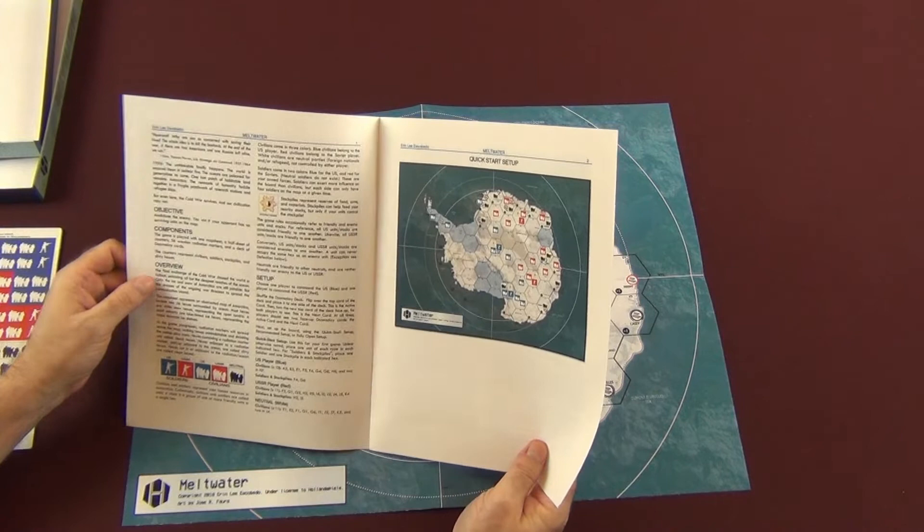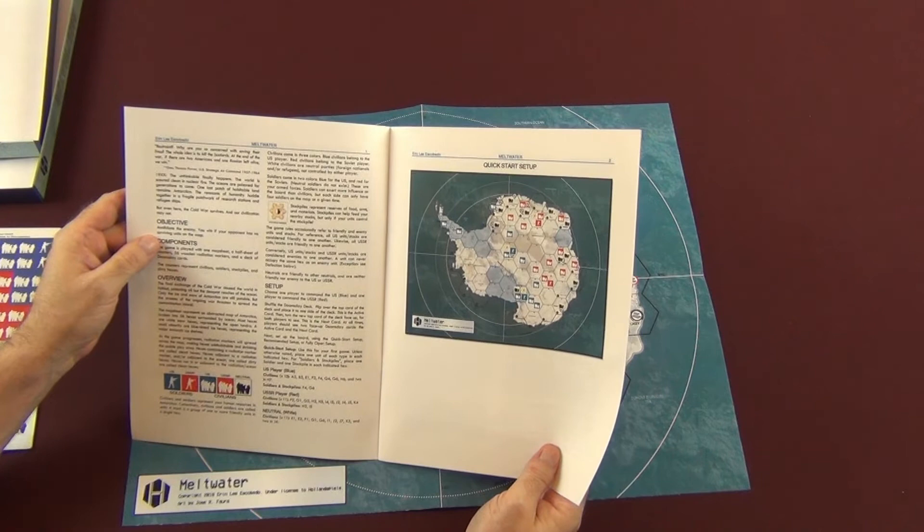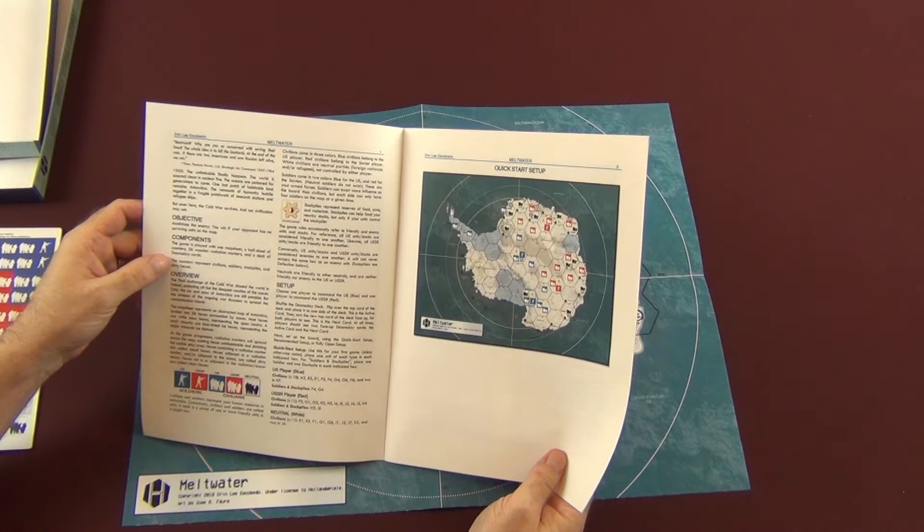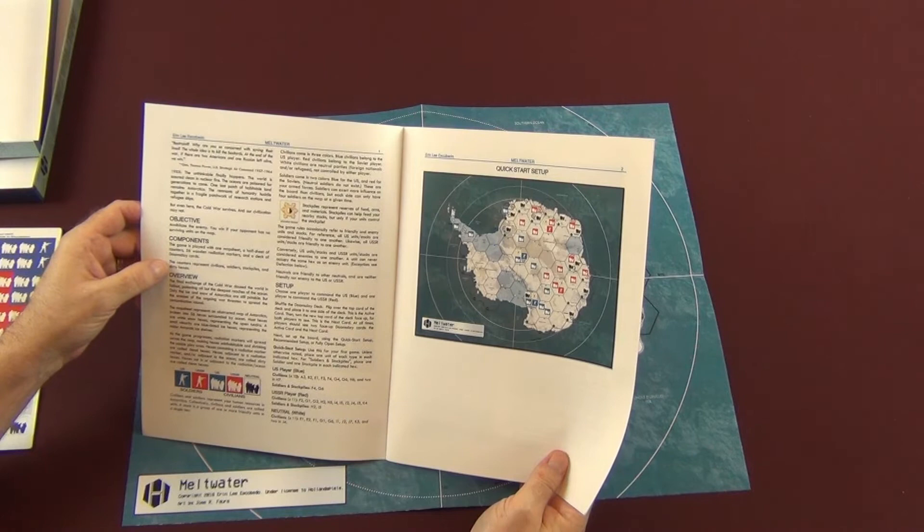You've got your objective, which is to annihilate the enemy. You win if your opponent has no surviving units on the map. Can't get any simpler than that. It's just wiping out your opponent. A game is played with one map sheet, a half sheet of counters, 56 wooden radiation markers, and a deck of doomsday cards.